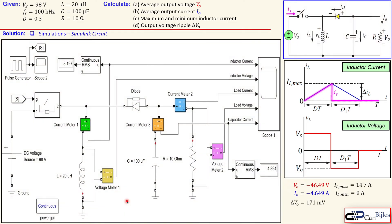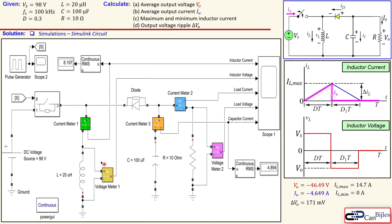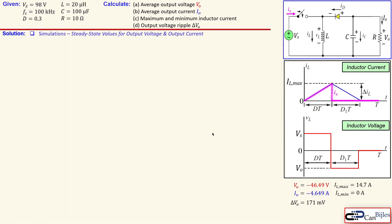Let's now look at the simulator circuit and results. In the Simulink circuit, we can see the switch, the inductor, the capacitor, and the resistor, the applied DC voltage source, and the scope connections. We have five plots which we will discuss in the next slides.